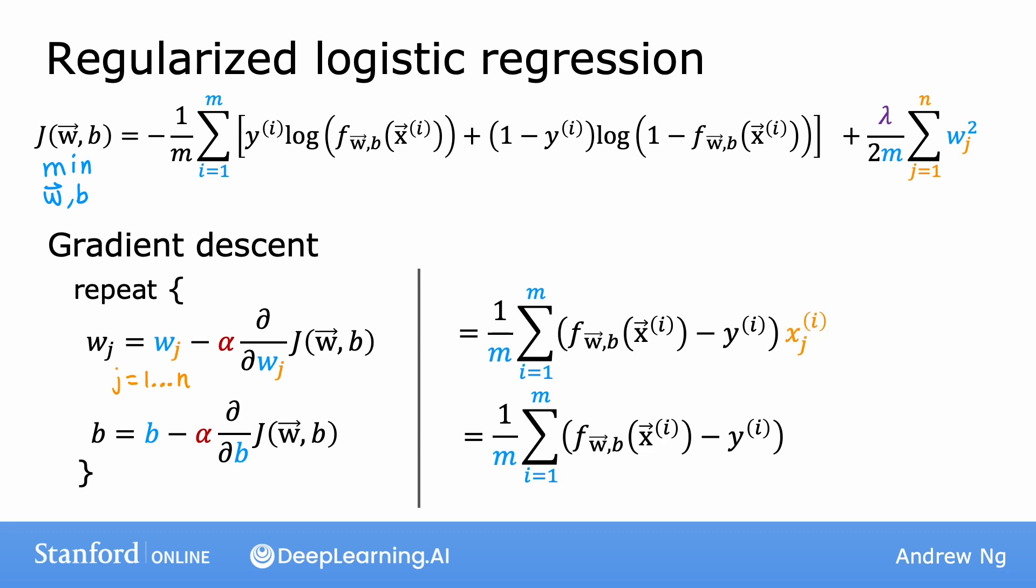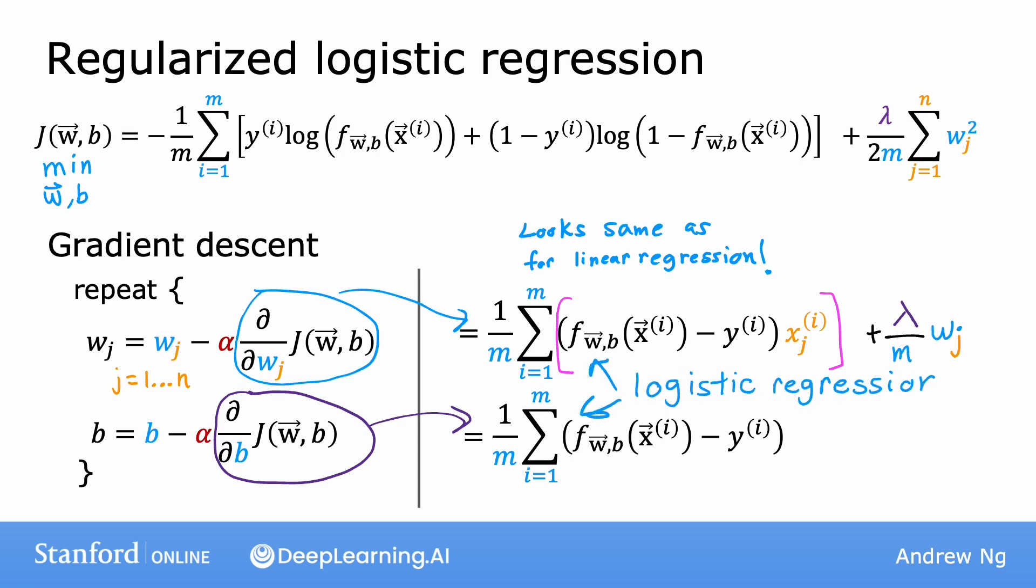These are the usual update rules for gradient descent. Just like regularized linear regression, when you compute these derivative terms, the only thing that changes is that the derivative with respect to wj gets this additional term: lambda over m times wj added at the end. It looks a lot like the update for regularized linear regression. In fact, it's the exact same equation, except that the definition of f is now no longer the linear function—it is the logistic function applied to z. Similar to linear regression, we regularize only the parameters wj, but not the parameter b, which is why there's no change to the update for b.